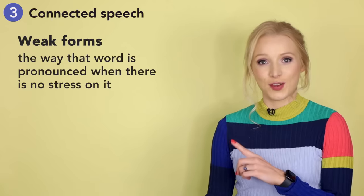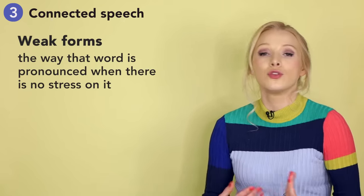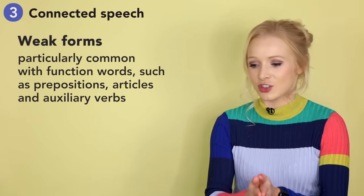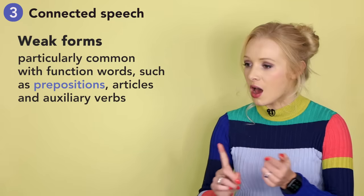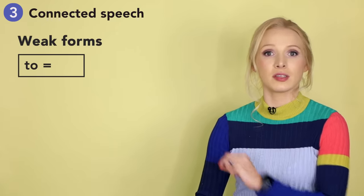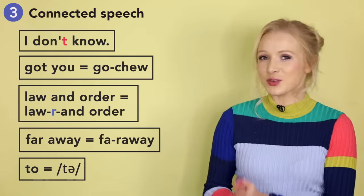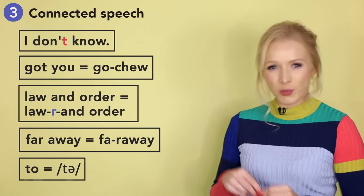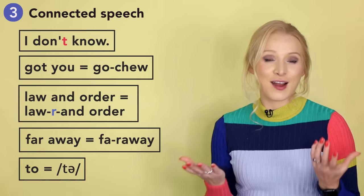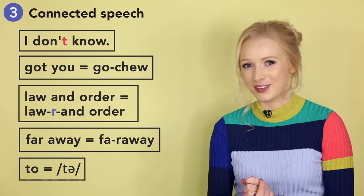And let's look at weak forms. In connected speech, certain words are often pronounced with a reduced or weak form. This is particularly common with function words such as prepositions, articles, and auxiliary verbs. For example, 'to' may be pronounced as 'tuh,' and 'and' may be pronounced as 'n.' Understanding how frequently connected speech is used will go a long way in improving your comprehension skills.